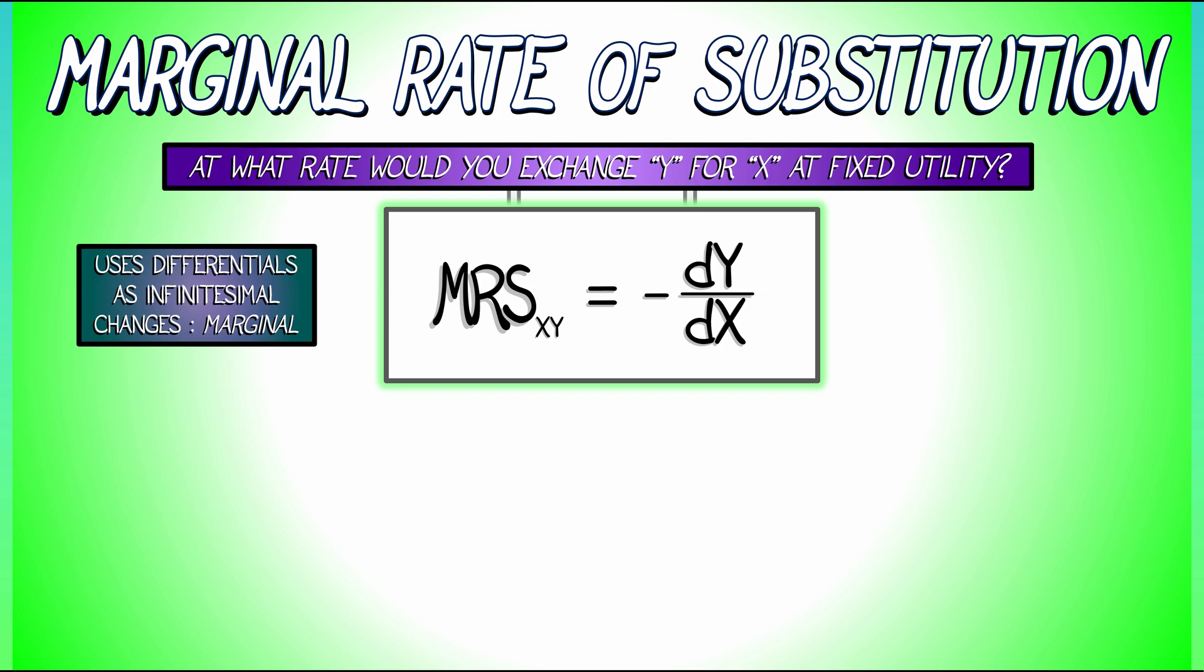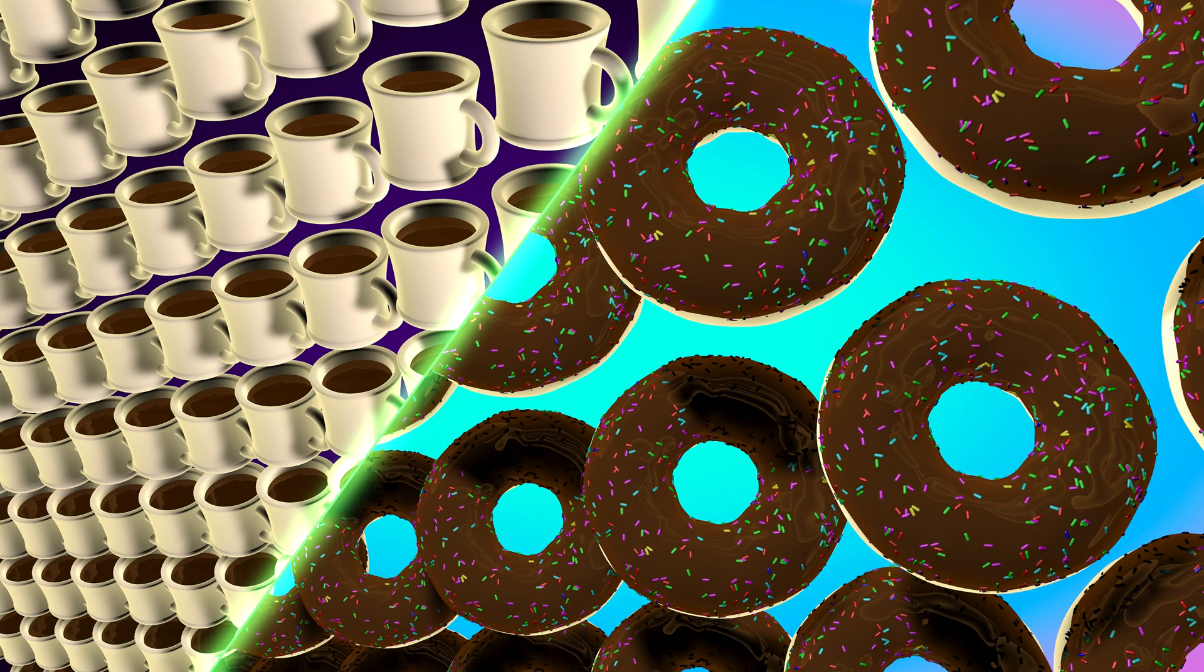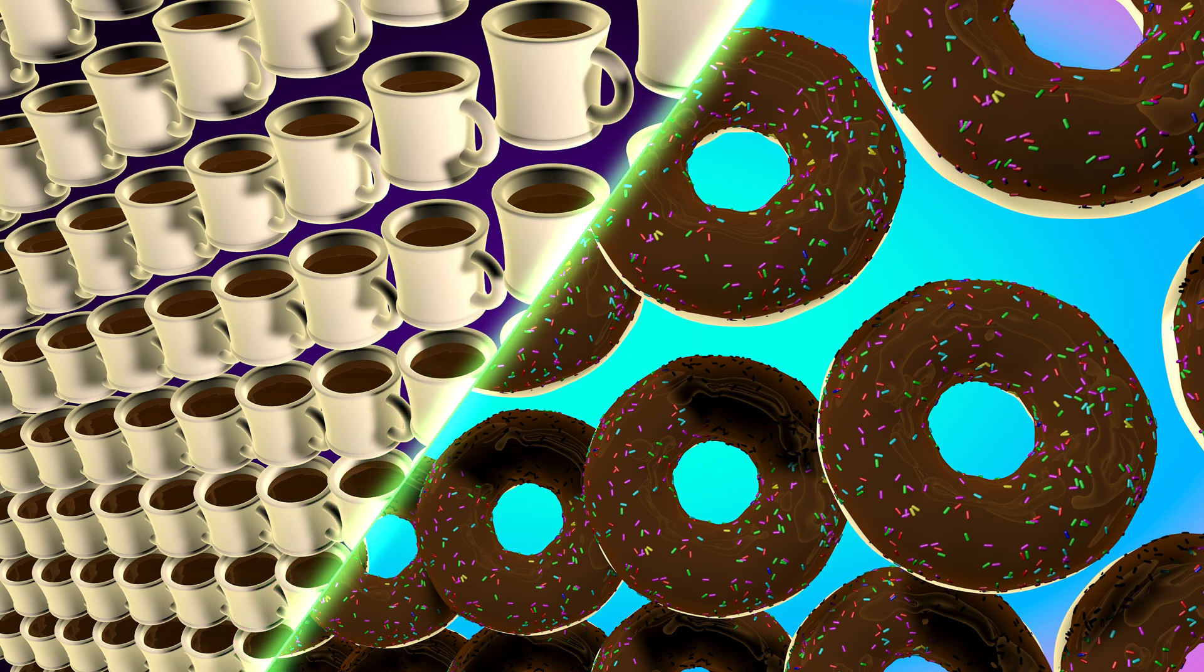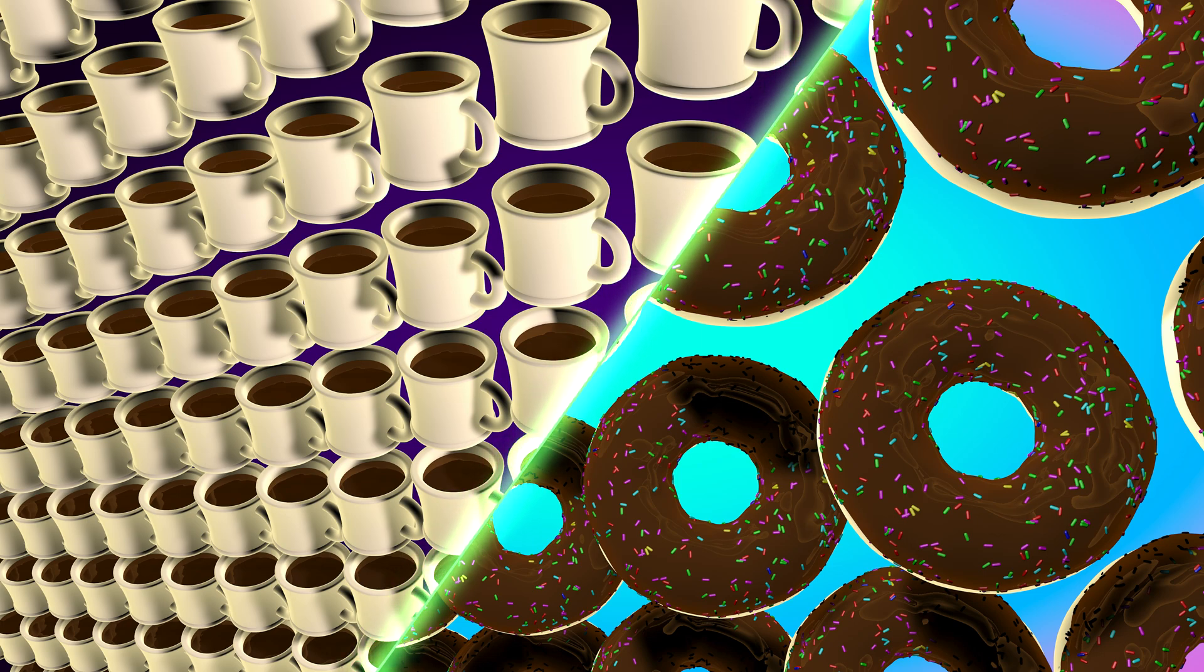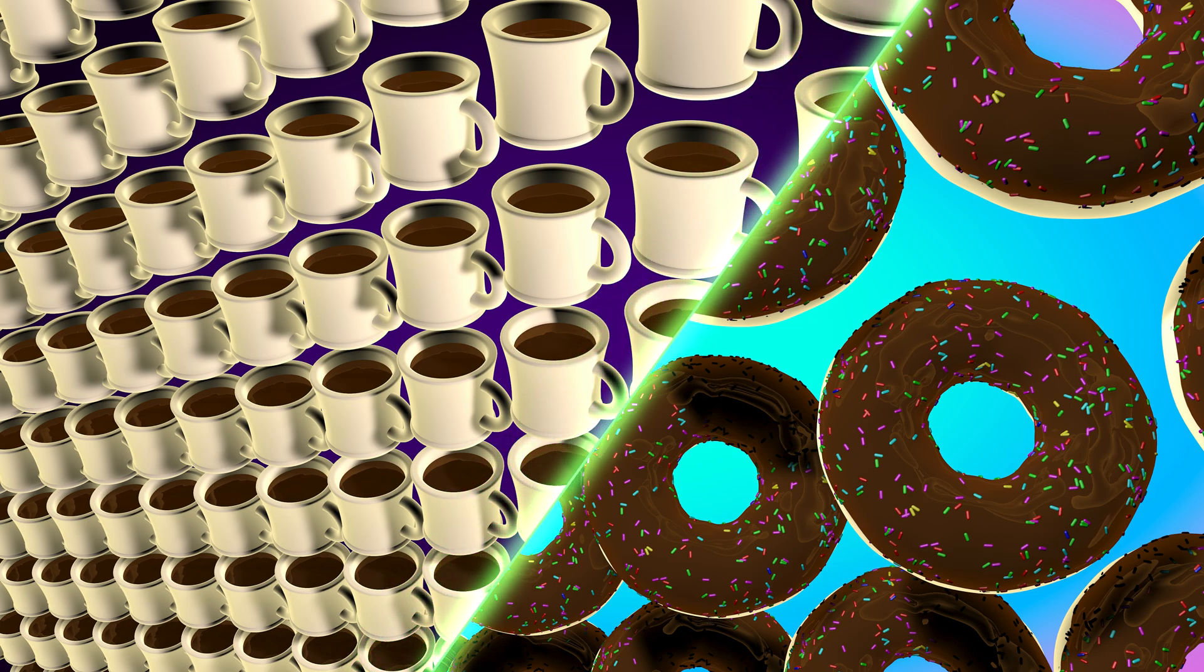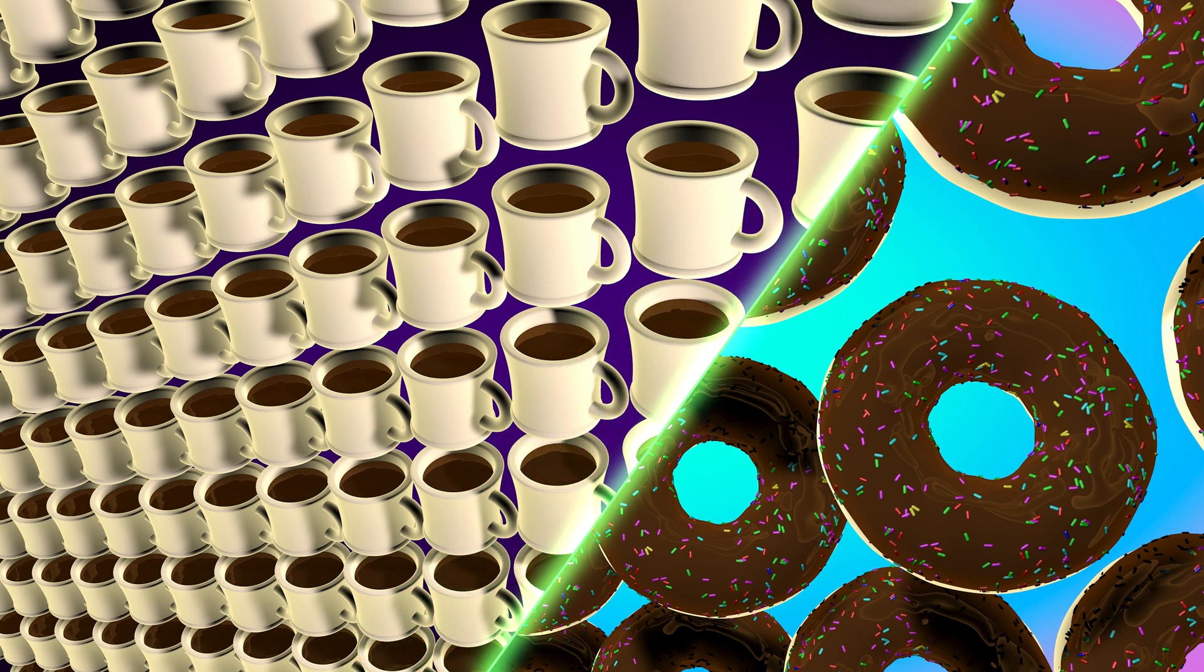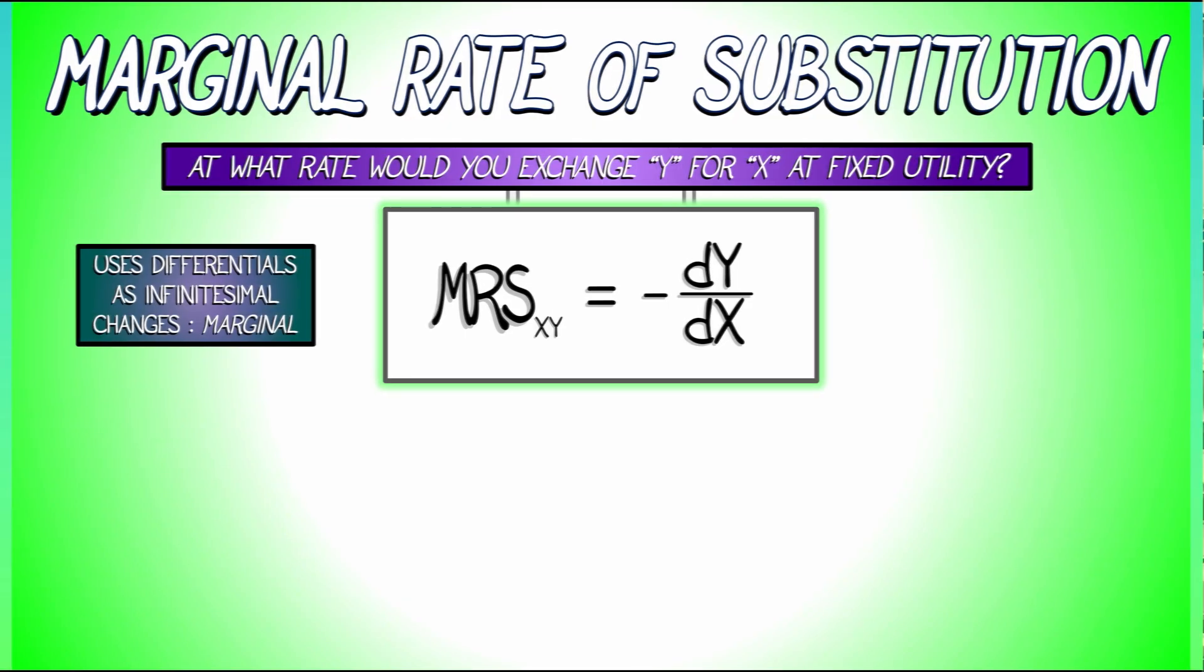One, the economics interpretation is if I change X a little bit, how much does Y change? That is, if I want to increase the amount of coffee that I have by a drop, how many crumbs of donut am I willing to give up to exchange for that small increase in the amount of coffee that I have? That's one interpretation.